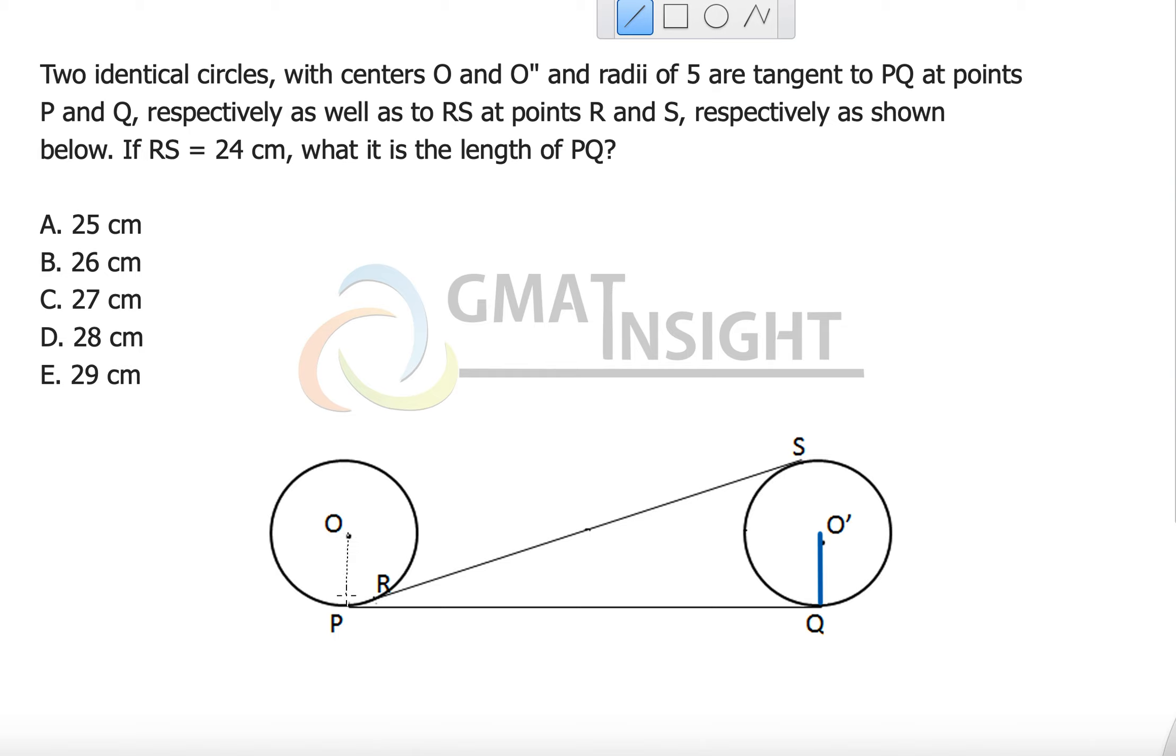So my first construction is joining the point of tangency, that means P and Q, with centers of the circle at O and O dash and then mark these angles 90 degrees right here. That's number one.